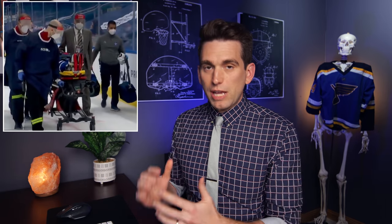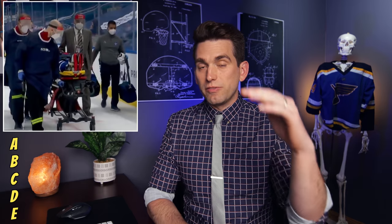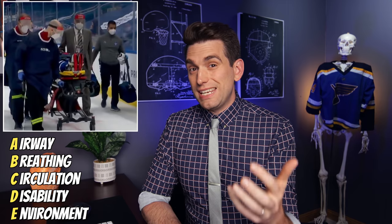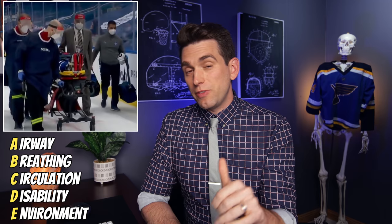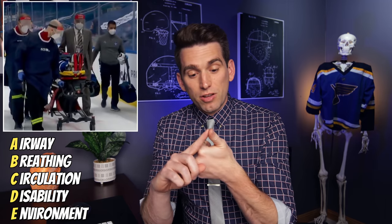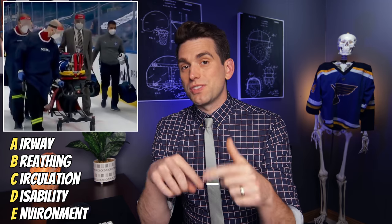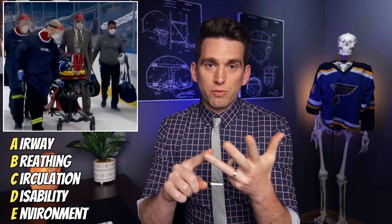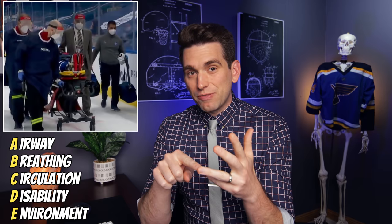Anytime we have a downed athlete like this, we go through what we call our ABCDEs for managing these acute situations. We start with airway, then breathing, then circulation or pulse and blood flow. D is disability, and E is environmental exposures. The very first thing when we get out there is: are they breathing, do they have a pulse? Then we go on to the neurologic exam, concussion, and cervical spine injury — only after we've confirmed the airway, breathing, and adequate circulation.